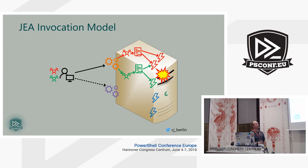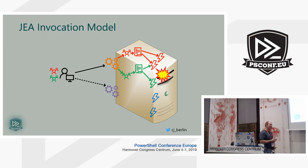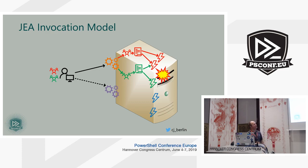What are these role capabilities and where do they live? Those are flat text files — nothing fancy, no encrypted registry blobs. They have the extension .psrc and live in the role capabilities subfolder of some module installed on the machine within one of the ps-module paths. The module does not have to export any commandlets actually used in the role, but you need a module to make those roles accessible to JIA. Flat text files in known paths or subfolders of known paths.